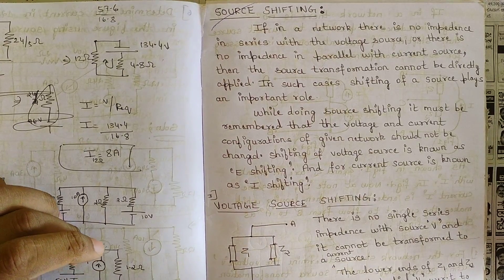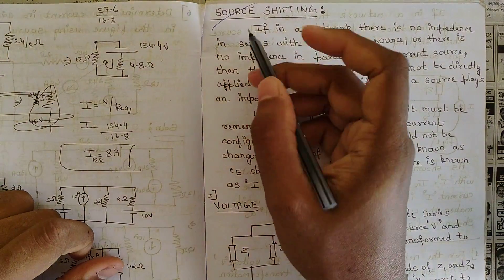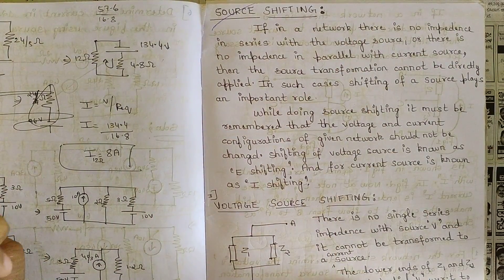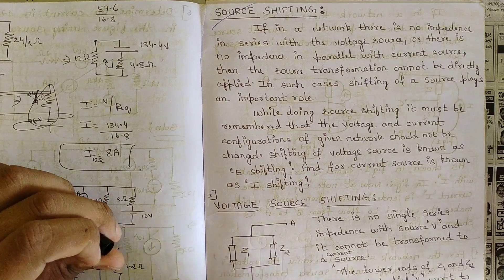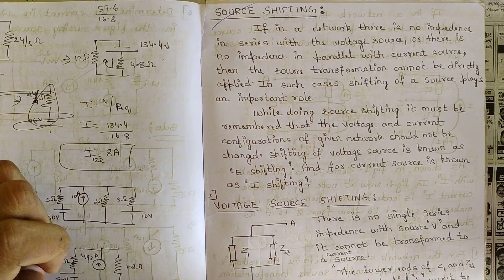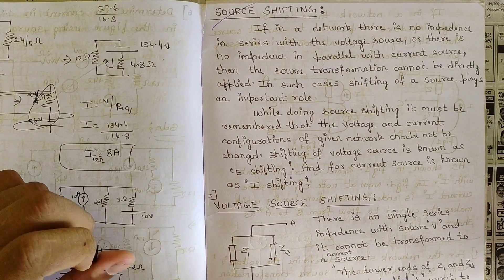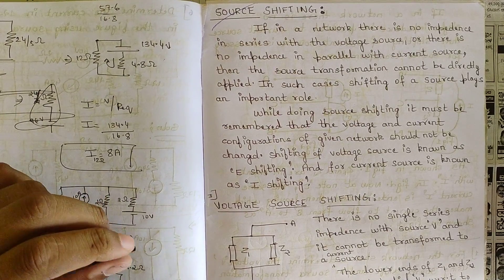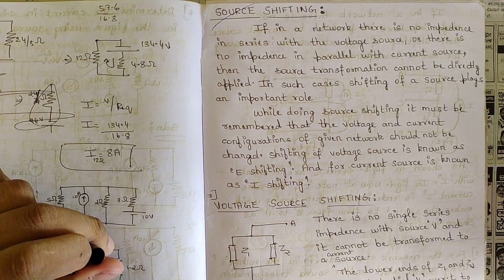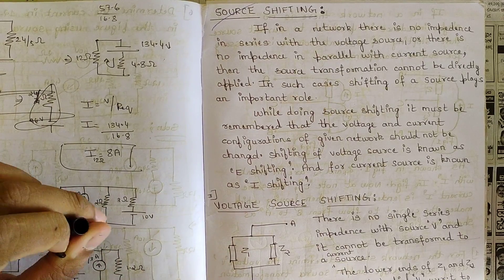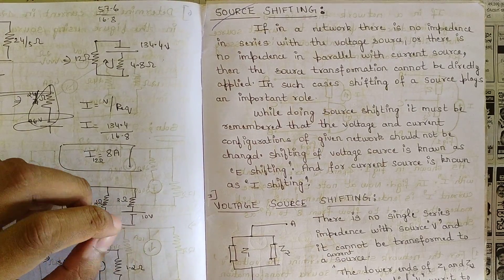So now we are going to discuss one more topic of basic concepts, that is source shifting. Till now we have discussed problems related to source transformation — how one current source is transferred into a voltage source along with the resistances. Now we are going to see the concept of source shifting: how to shift the current sources and voltage sources into different branches.